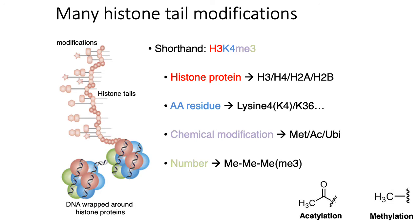Because there are so many different types of histone tail modifications, people have devised a systematic way of naming histone modifications to make it easy to communicate which modifications you're talking about. Generally, there are three to four parts of a histone modification name. For example, one particular modification is called H3K4ME3.